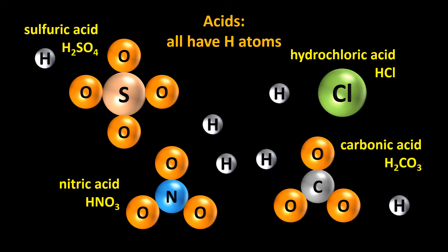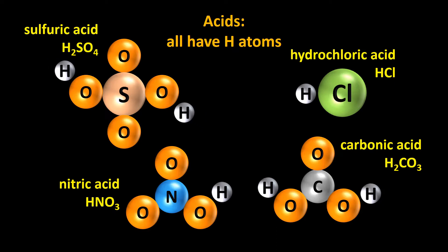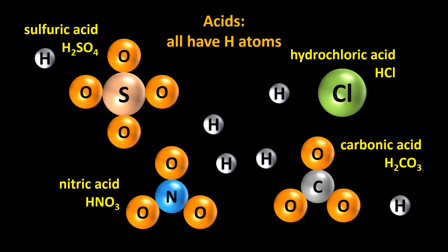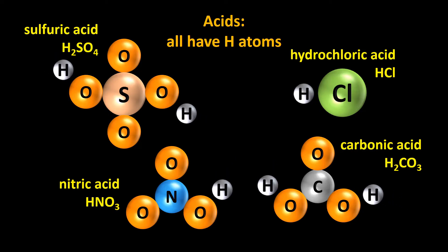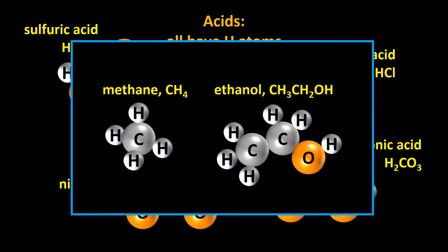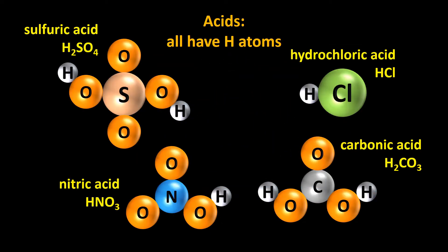When dissolved in water, some or all of the hydrogen atoms of an acid can separate from the rest of the molecule and chemically react with things. Not all substances with hydrogen atoms are acids though. Methane and ethanol, just to name two examples, are not acids because the hydrogen atoms don't separate from the rest of the molecule when these molecules are in water. At a simple level then, an acid is a chemical that has hydrogen atoms that separate fairly easily when dissolved in water, and that makes acids fairly reactive.